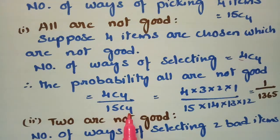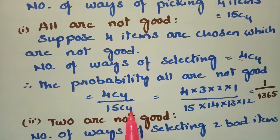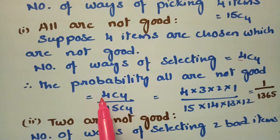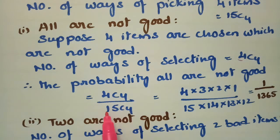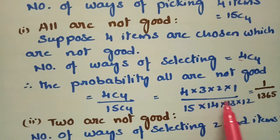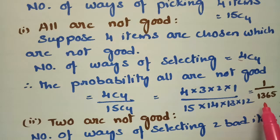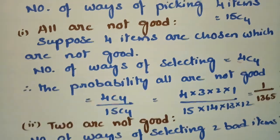The probability that all are not good is 4C4 divided by 15C4 — selecting 4 not-good items from 4, out of all ways to select 4 from 15. After calculation, the answer is 1 by 1365.